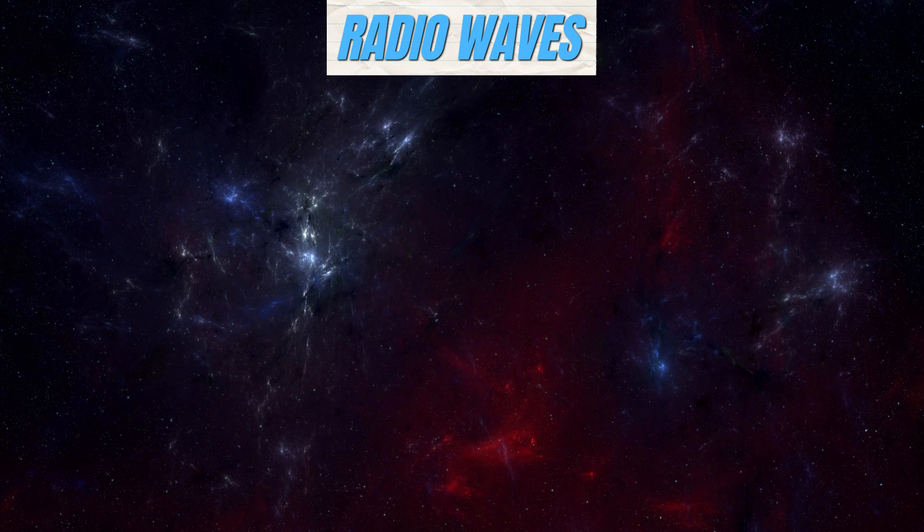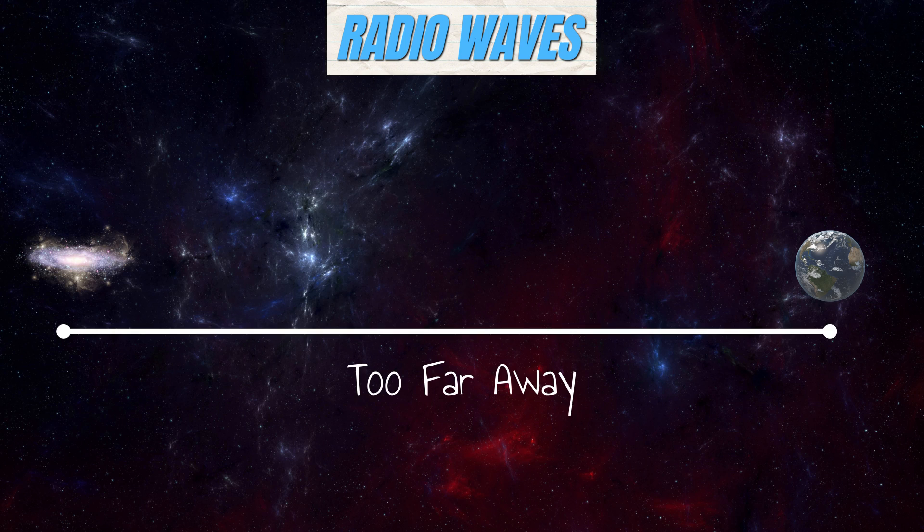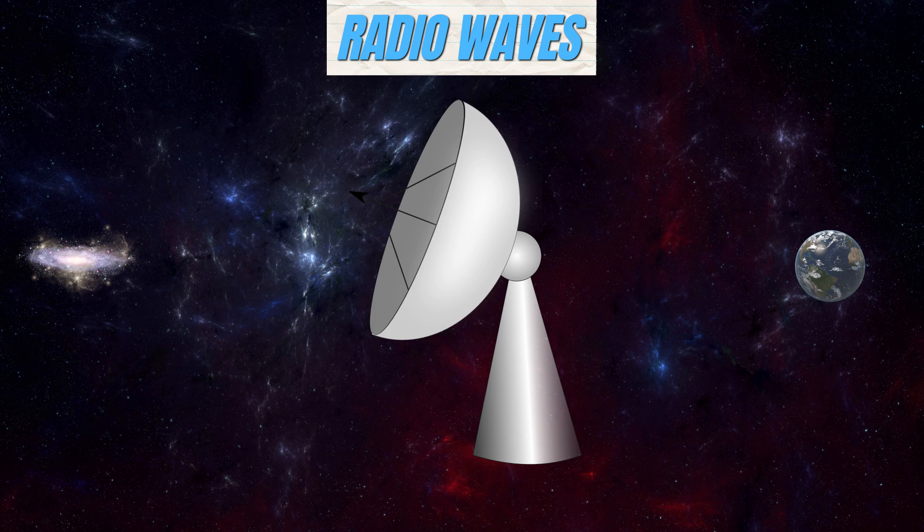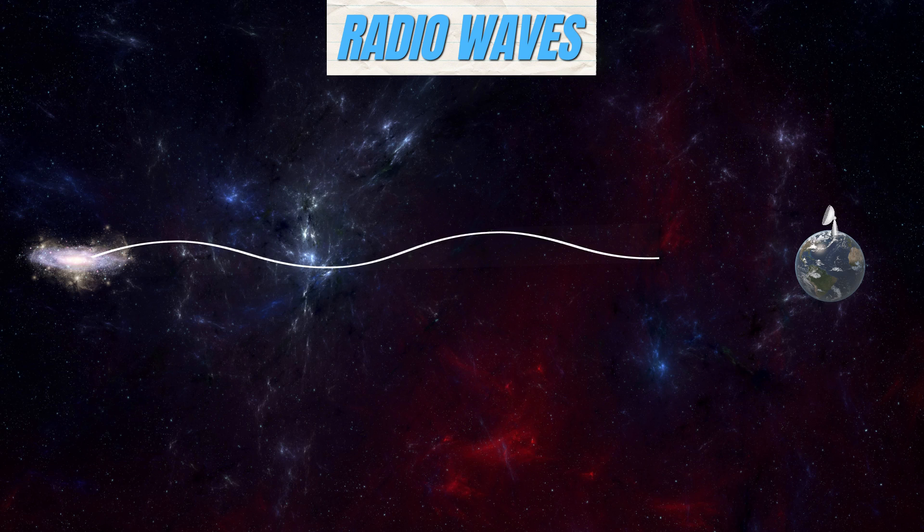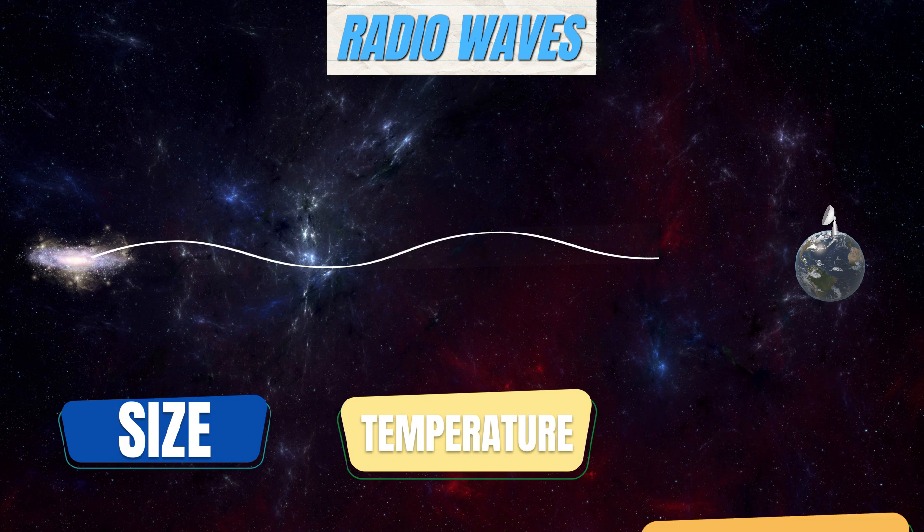For example, radio waves are used to study objects in space that are too far away or too faint to be seen in the visible light spectrum. Radio telescopes can pick up the radio waves emitted by distant galaxies and other objects in space, and this can give us information about their size, temperature, and other characteristics.